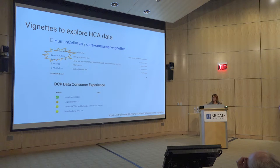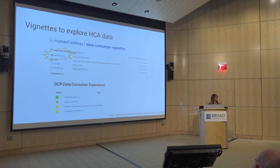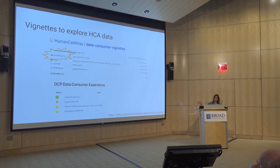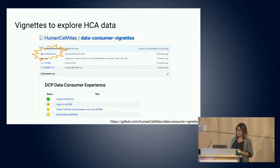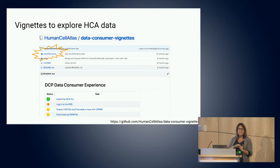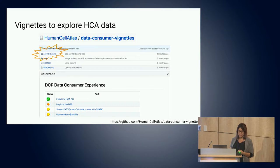Brian just showed you a few great ways to access the data in the HCA via the browser, via the matrix service. I wanted to highlight that there exists this GitHub repo that has examples for other ways that you can access the data. In there, if you click into the tasks folder, you can see different ways to access programmatically via the API, via the command line tool, if you'd like some other examples of that.